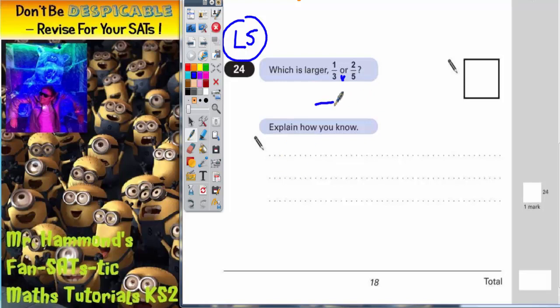So if we make 1/3 out of 15, to get from thirds to fifteenths, we're actually multiplying that by 5. So 3 times 5 is 15, but we've got to do the same to the top. So 1 times 5 is 5. So 1/3 is the same as 5/15.